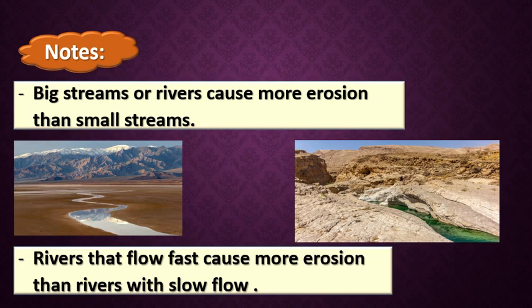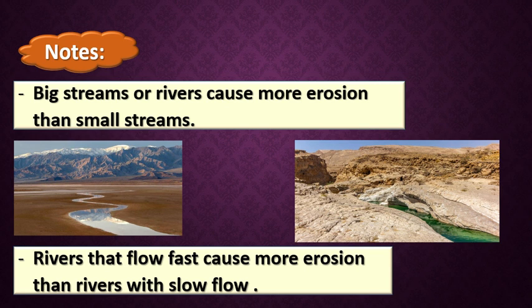Some notes: big streams or rivers cause more erosion - they take more sediments from one place to another - than small streams. And a river that flows fast will take more sediments, causing more erosion than a river with slow flow.